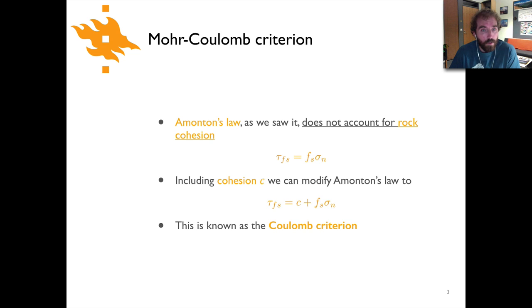Now what we have seen previously, this relationship between the shear stress, the frictional coefficient, and the normal stress is something that is referred to as Amonton's law. The problem with Amonton's law is that it doesn't take into account rock cohesion. So if you took a chunk of granite at the surface of the earth today and you had very little normal stress, you wouldn't expect simply to begin to shear the rock just because you have this relationship between the shear stress, friction coefficient, and normal stress.